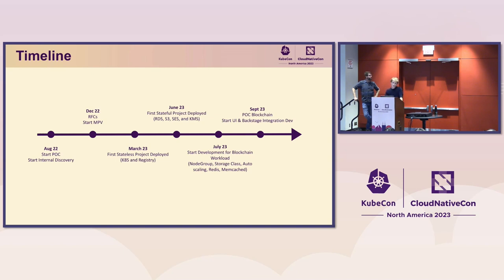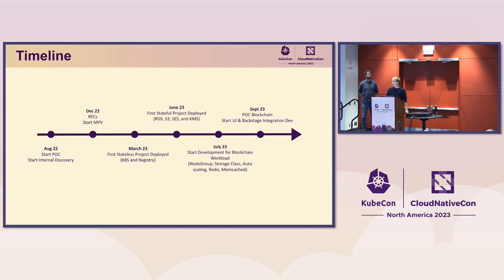Back in December, we had written documents requesting comment across the company and started developing the MVP. Then in March, we had our first version of the platform. We onboarded our first client — a very easy application with just a Kubernetes cluster and a registry to deploy the application — and it was deployed to production.